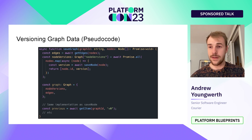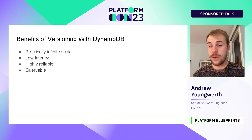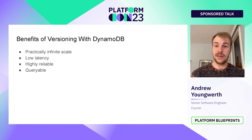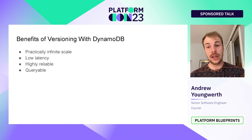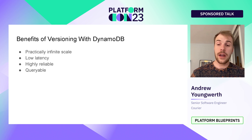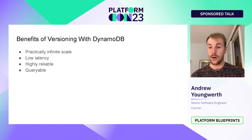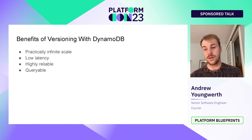Now let's get into the benefits of versioning with DynamoDB. These are basically the benefits of using DynamoDB in the first place: you get practically infinite scale, low latency, and it's highly reliable. Another main benefit — and the reason Courier went with DynamoDB — is that it's extremely queryable. We can get a lot of information about each node, its usage, and how things are getting connected to each other.